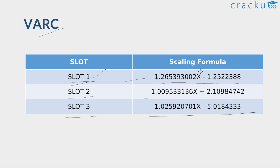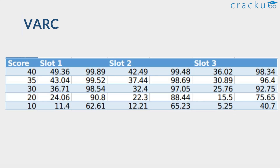Looking at the Slot 1 formula: it's 1.265x minus a constant of 1.25. That means if you scored on the higher side in Slot 1 — say your raw score was more than 30 — your scaled score goes up by a much higher number. Compared to someone who scores around 10, the scaling will not be as high.